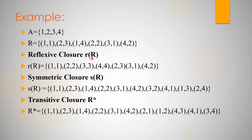Reflexive closure is represented as r(R). For reflexive closure, for each element a in A, we add (a, a) to the relation. In R we already have (1,1) and (2,2). The elements 3 and 4 are missing their reflexive pairs. So we need to add (3,3) and (4,4). Then the reflexive closure r(R) = {(1,1), (2,2), (3,3), (4,4), (2,3), (1,4), (3,1), (4,2)}.